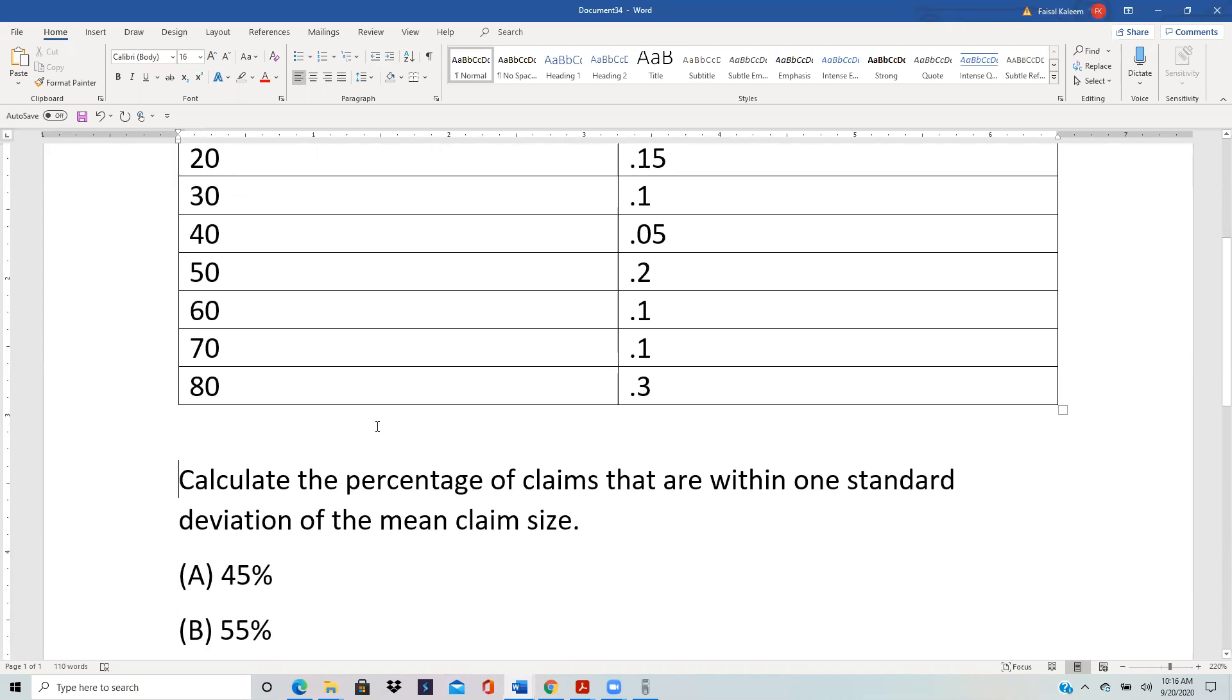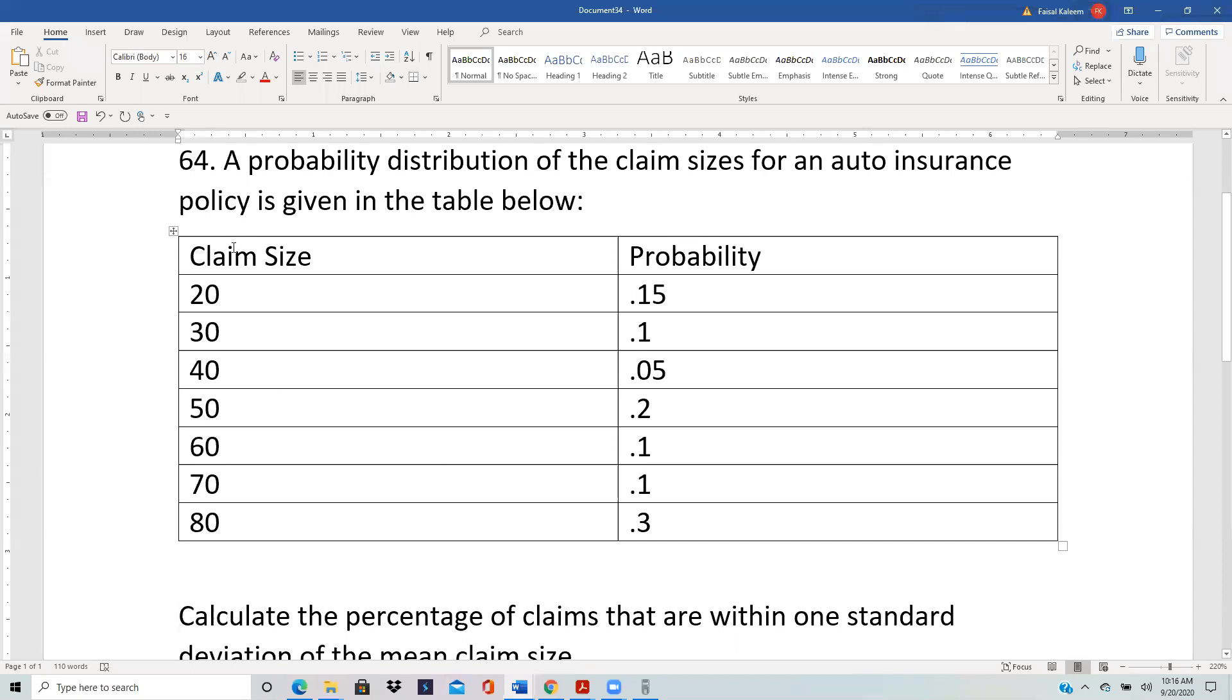So we first need to find the mean and standard deviation. Now for a discrete data, discrete probability distribution like this,